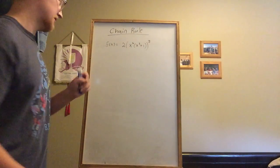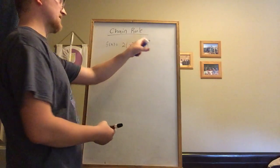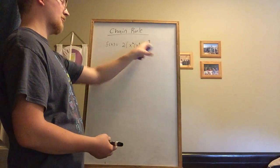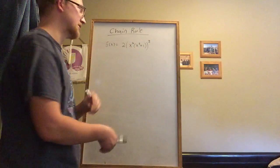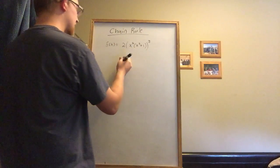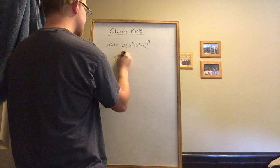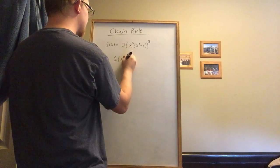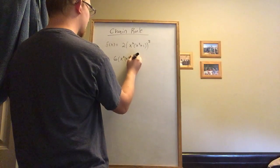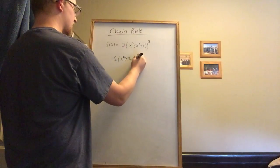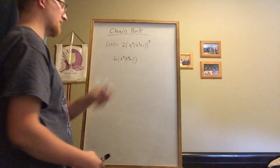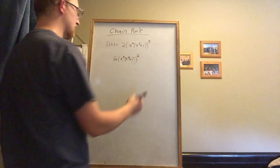My first step, due to the chain rule, is to apply the power rule for this larger outer function. I bring down the 3, it multiplies by the 2, giving me 6. Everything on the inside stays the same for now because of the chain rule. Then we subtract 1 from the power, giving us to the power of 2.